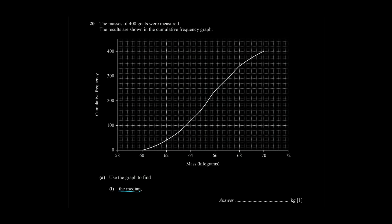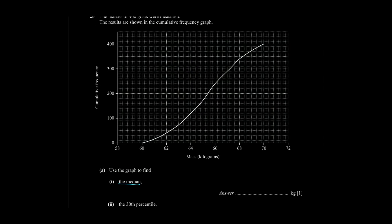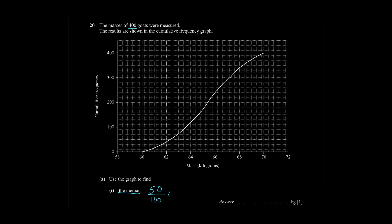The median is basically a measure of where half of your data lies. So in this case if you want to calculate the median, we are simply going to calculate 50% of the total frequency. The total frequency as you can see from the question is 400. So what is 50% of 400? This is 200.